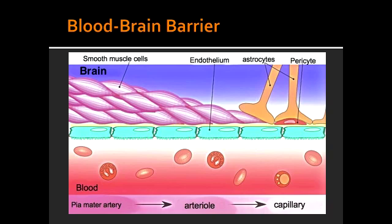What is an area of the brain that has fenestrated capillaries and no blood-brain barrier so it would allow neurosecretory products to enter the circulation? The neurohypophysis has fenestrated capillaries and no blood-brain barrier, allowing ADH release into the blood.